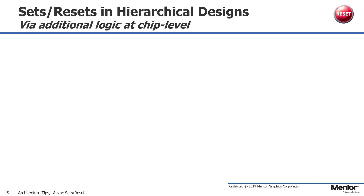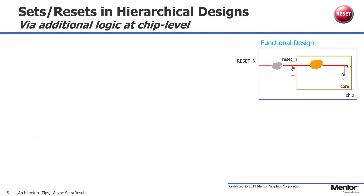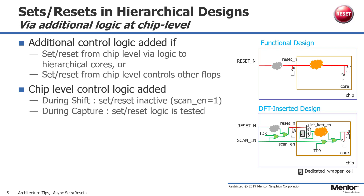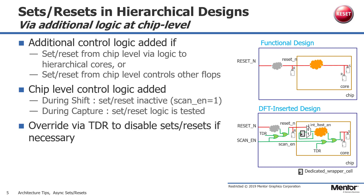Now let us look at another scenario where the chip level has physical layout regions. The set or reset control to the physical core comes from combinatorial logic at the chip. Sometimes there are flops at the chip level that are being fed by the chip level sets or resets. In either of these cases, additional logic needs to be added to have the chip level asynchronous sets or resets disabled during shift and tested during capture. There is also the option to override the asynchronous sets or resets via the test data register if necessary.